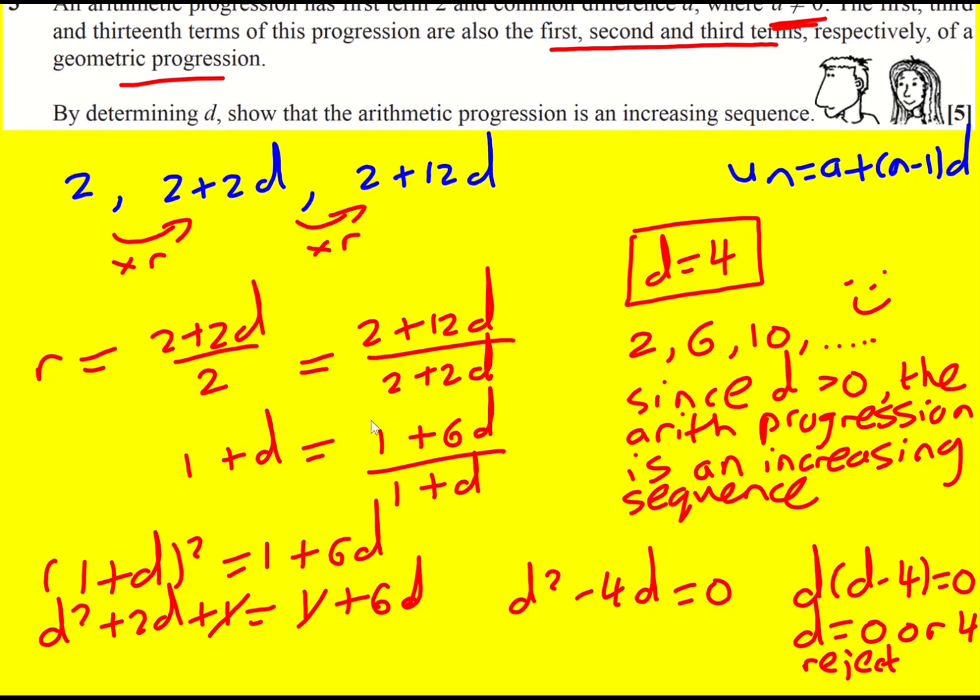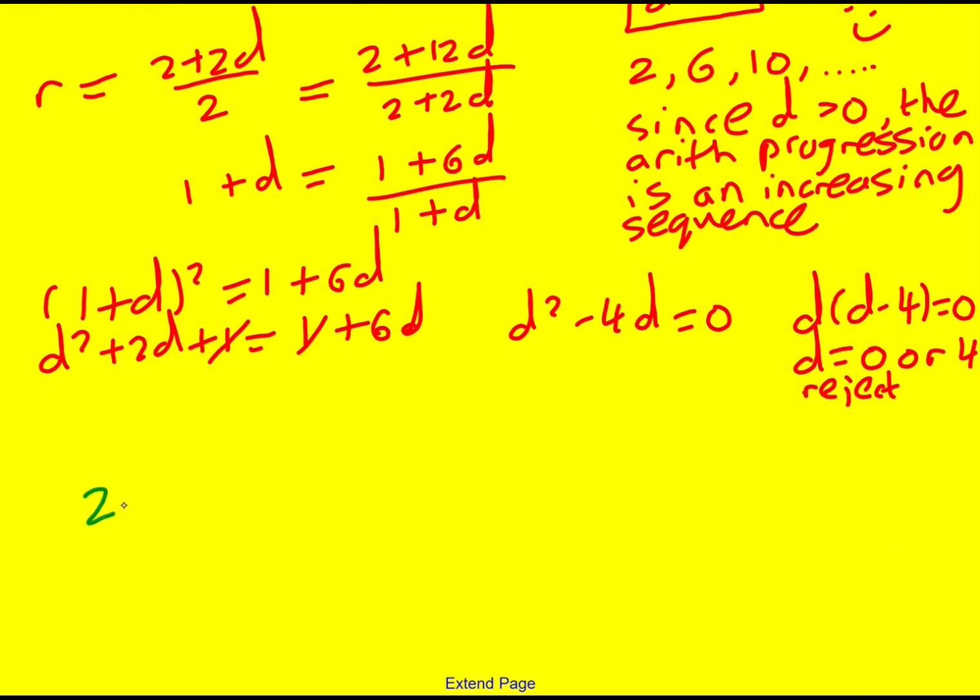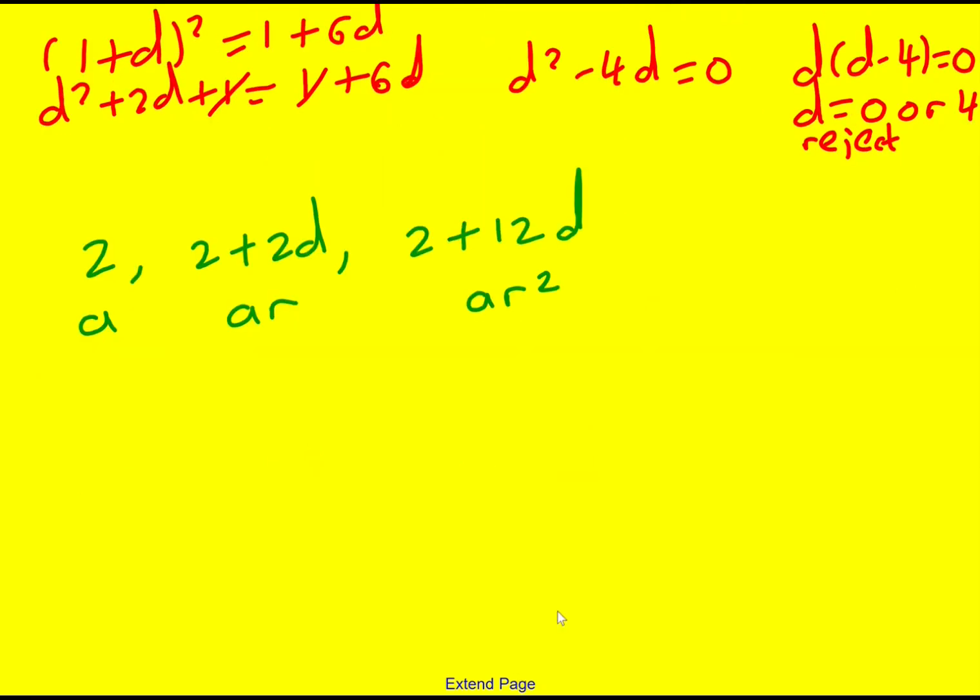So when we got our 2, 2 plus 2d and 2 plus 12d, you could call this a, ar and ar squared, which actually would become 2, 2r and 2r squared from which we can construct some simultaneous equations. 2r is equal to 2 plus 2d and 2r squared is equal to 2 plus 12d.